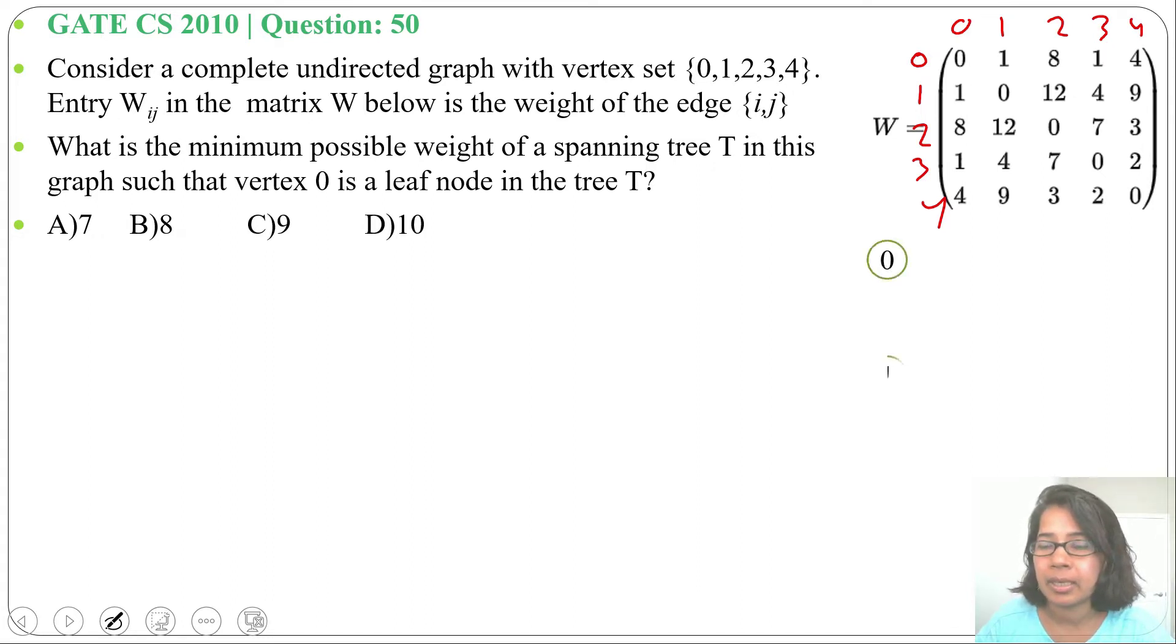There will be five vertices: 0, 1, 2, 3, 4. Now 0 to 1 weight is 1, then 0 to 2 weight is 8, 0 to 3 weight is 1, 0 to 4 weight is 4.